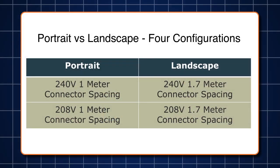The cable is available in four configurations: portrait or landscape, and 240 volt or 208 volt. The portrait cable has connectors 1 meter or 39.4 inches apart, while the landscape cable connectors are 1.7 meters or 66.93 inches apart.